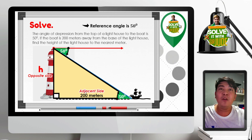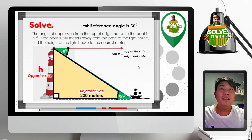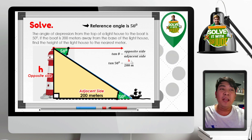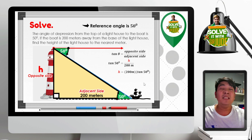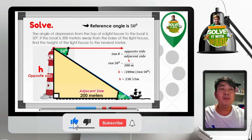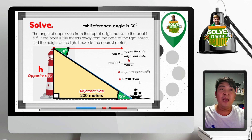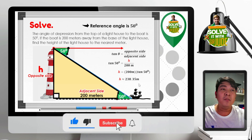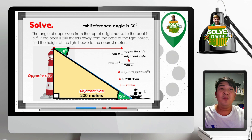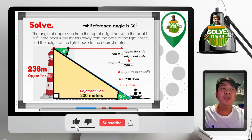To relate the opposite side and adjacent side, we use the tangent ratio: tangent theta equals opposite over adjacent. Substituting: tangent 50 degrees equals H over 200 meters. Cross-multiplying gives H equals 200 meters times tangent 50 degrees. Using the scientific calculator, that is approximately 238.35 meters. We are asked to find the height to the nearest meter, so rounding off gives H equals 238 meters. Hence, the height of the lighthouse is 238 meters.